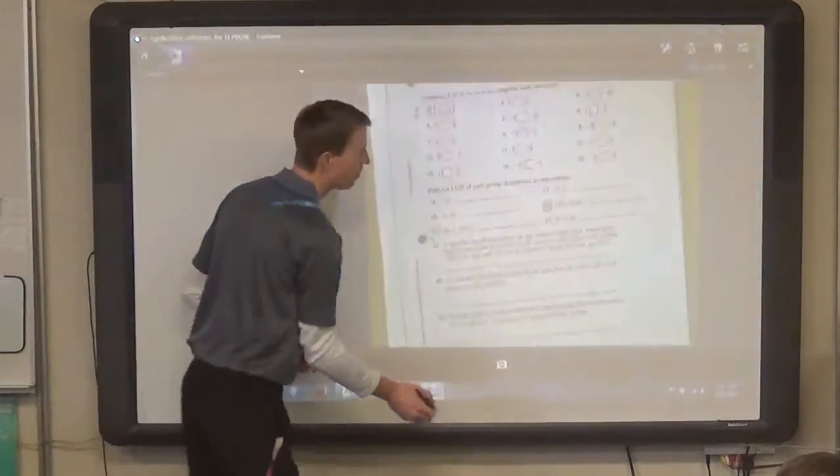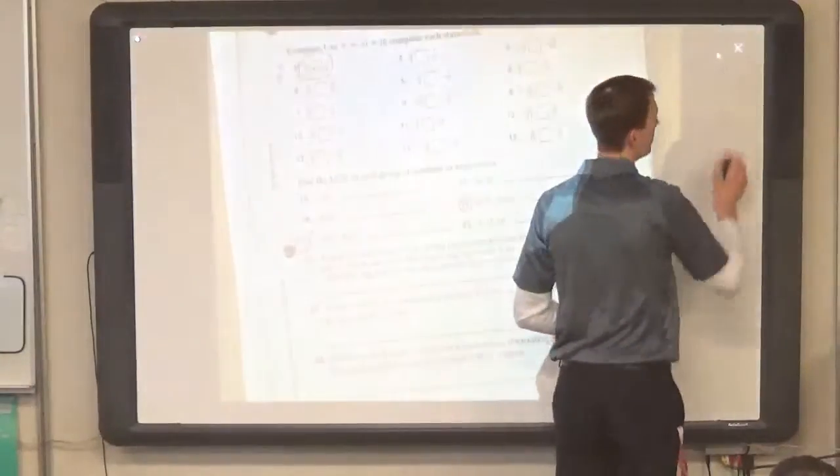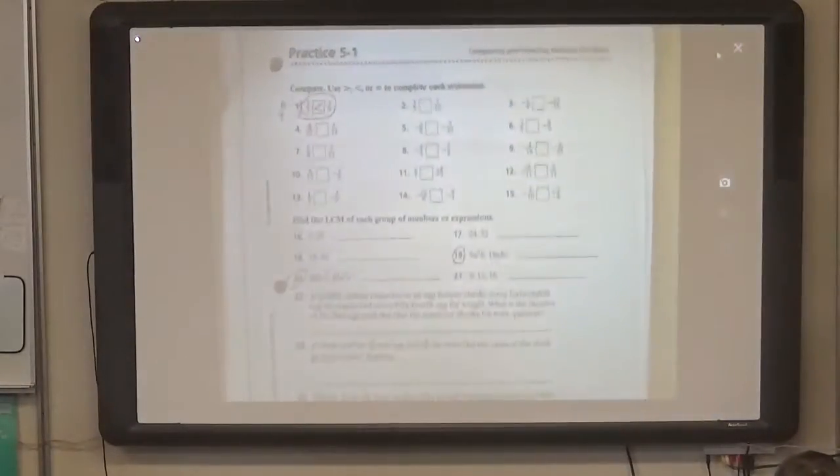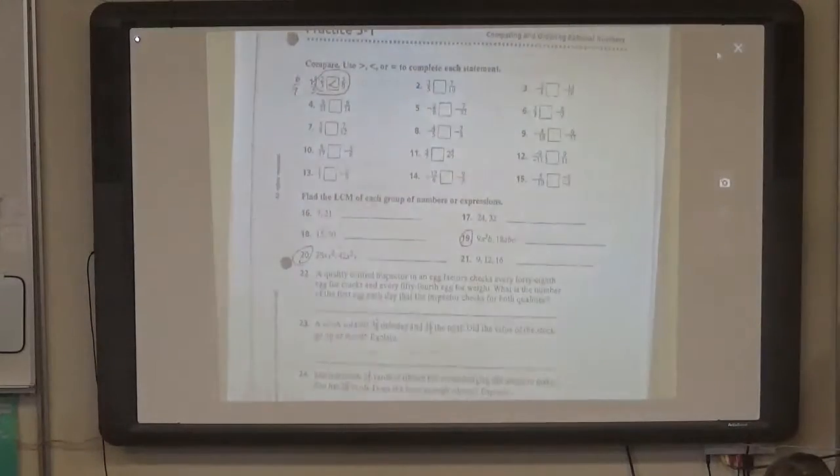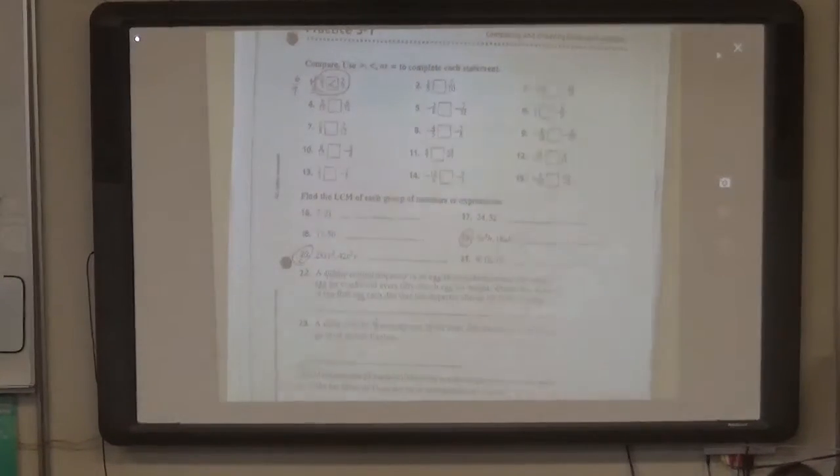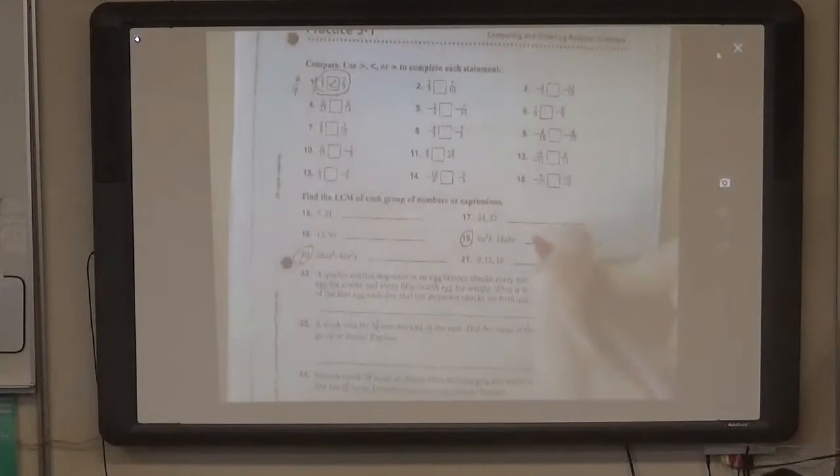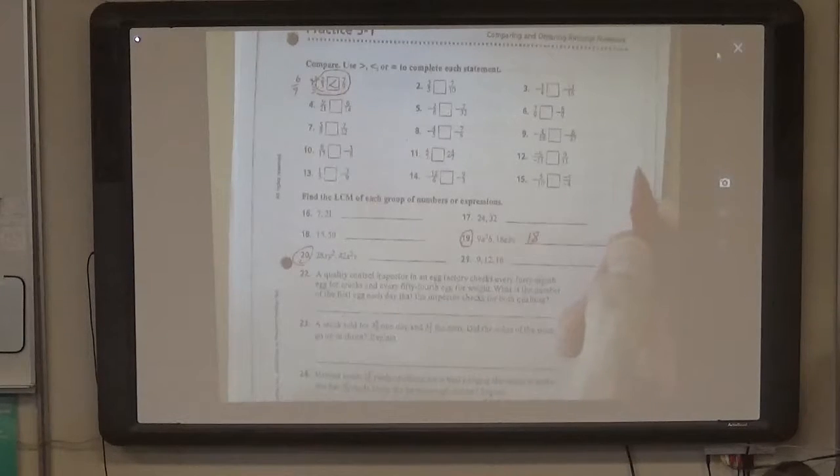So, let's go to your worksheet and do number 19. Now, the numbers here are simple because 9 goes into 18, right? 18 is a multiple of 9. So, we can use 18 as our answer. 9 goes into 18 and 18 goes into 18. Wouldn't it be 9 because it's low?